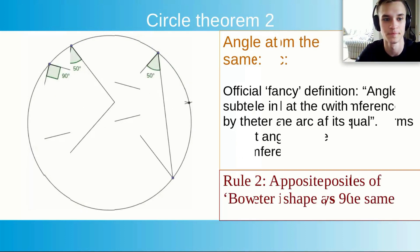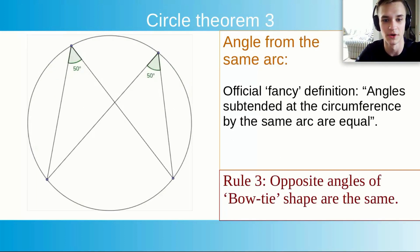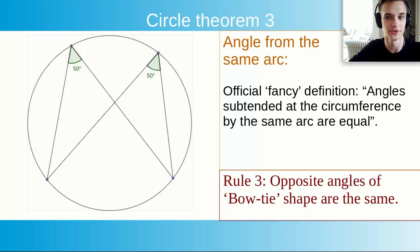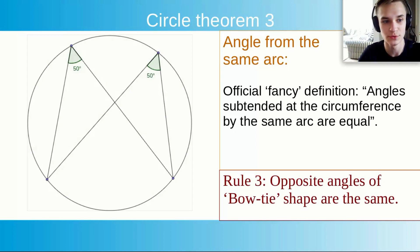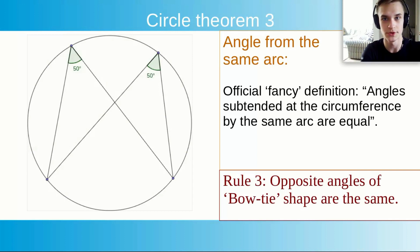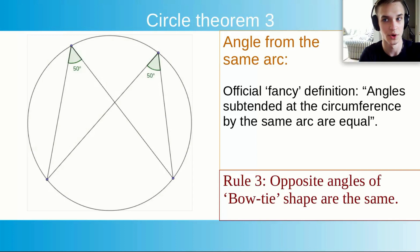Circle theorem 3: Angles from the same arc. The official definition is: angles subtended at the circumference by the same arc are equal. So opposite angles of the bowtie shape are the same — that's how I like to think of it. You need to recognise that this theorem might look similar to the first one, but for theorem 3 all four points lie on the circumference, unlike in theorem 1 where there's a point at the centre.